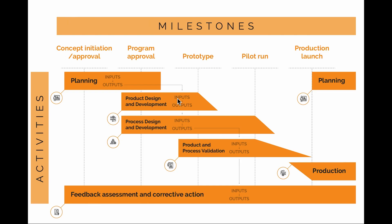The outputs of the product design and development phase include a risk analysis on the design — typically based on FMEA — and verification of the design itself. You check whether the design allows you to respond favorably to the desired product characteristics. Outputs also include a preliminary bill of materials, a preliminary process flow chart, a more in-depth quality assurance plan, and a much more detailed list of special characteristics.